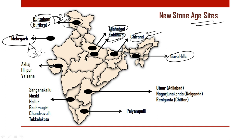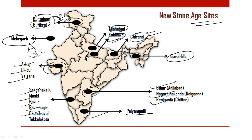Other major Neolithic sites include Garo Hills in Meghalaya; Utnoor, Nagarjunakonda and Renigunta in Andhra Pradesh and Telangana; Paiyampalli in Tamil Nadu; Akharj, Hirpur and Valsana in Gujarat; and Sanganakallu, Maski, Hallur, Brahmagiri, Chandravalli and Tekkalakota in Karnataka.